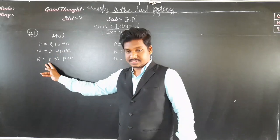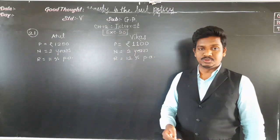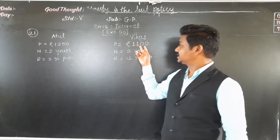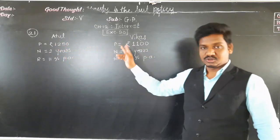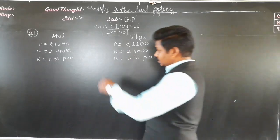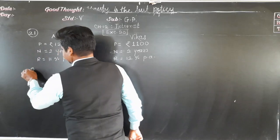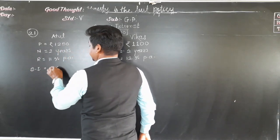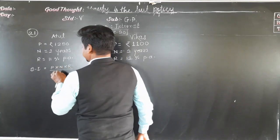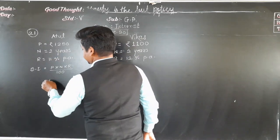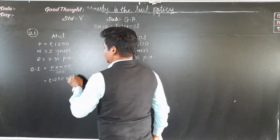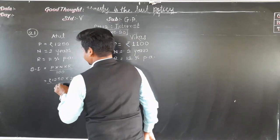Although Vikas's rate of interest is more, Atul's principal is more. So we cannot decide from this alone whose interest is more — we need to calculate. Simple interest for Atul equals P into N into R upon 100 = 1250 into 2 into 11 upon 100.